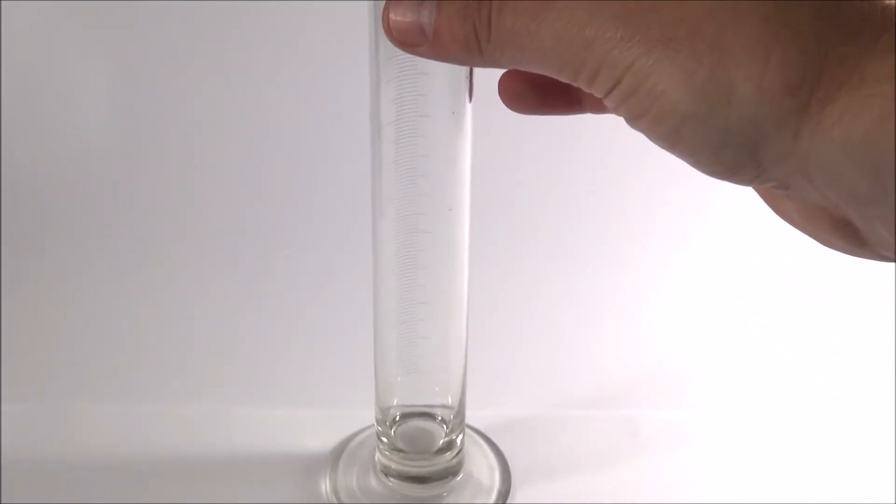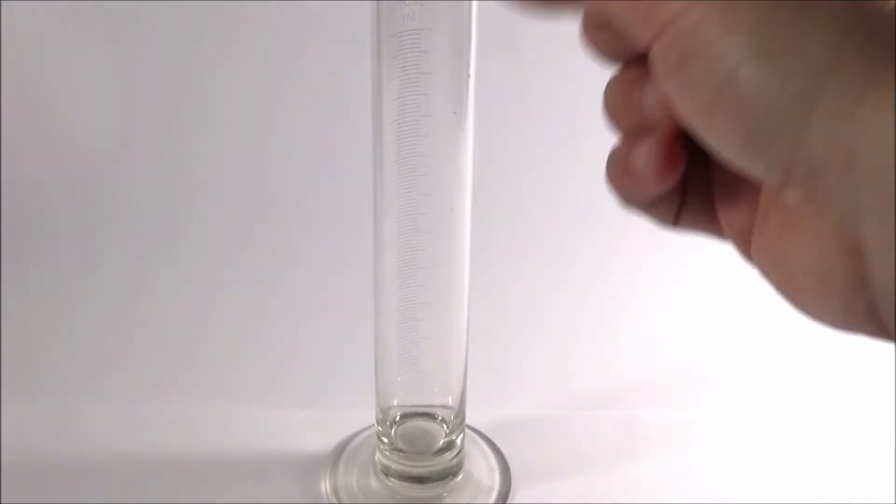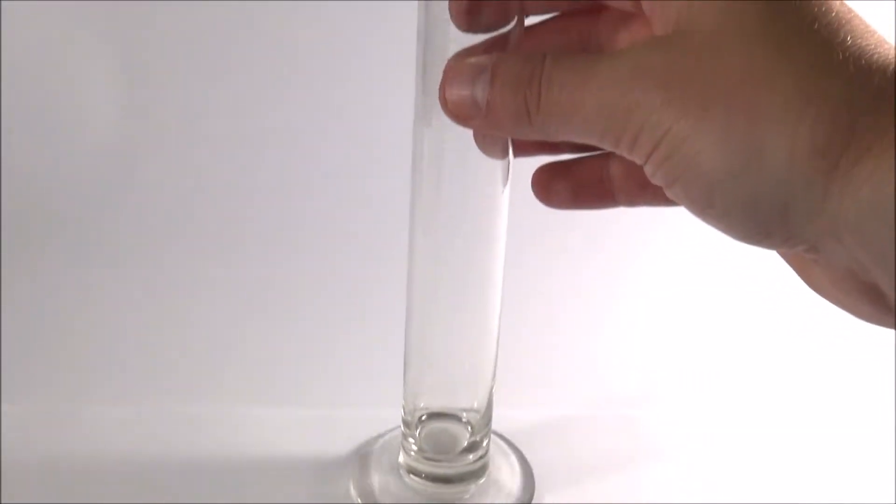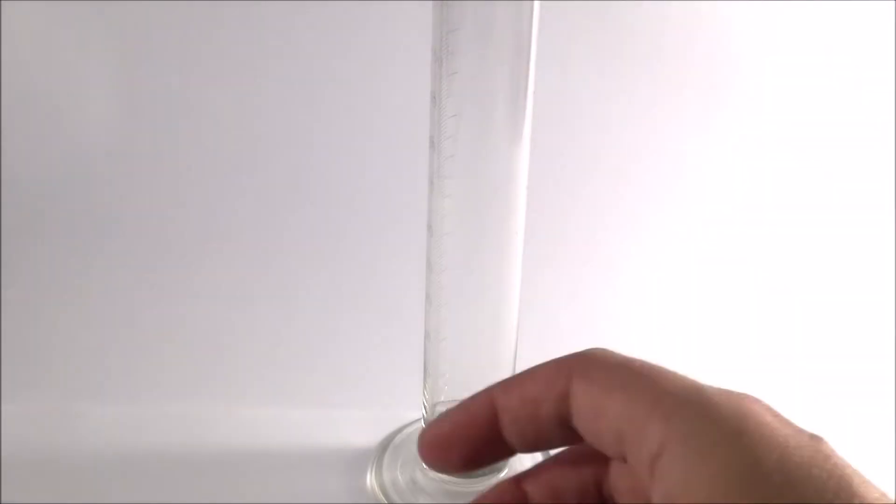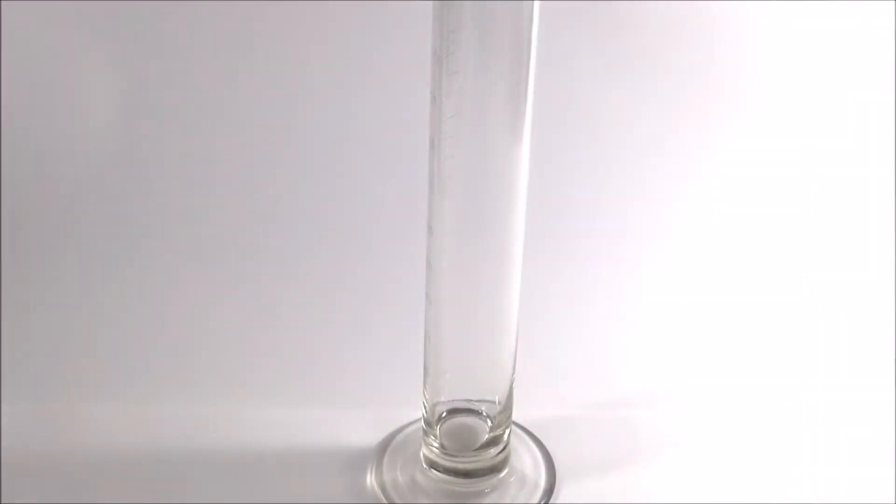I find glass is quite nice because it's very easy to see what's inside. If you have a plastic tube it's often a bit harder to actually see what's on the inside. So I've just got a glass tube here and inside this I'm going to put a viscous liquid.